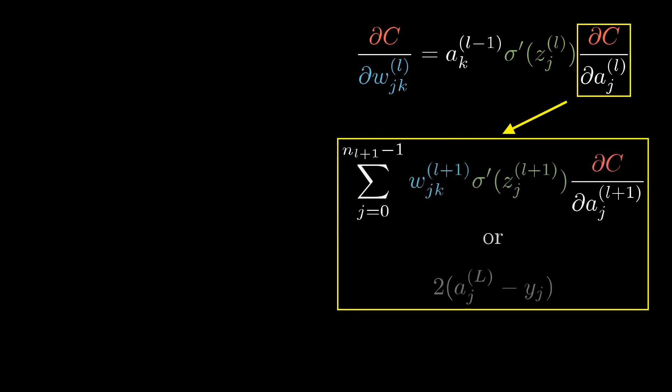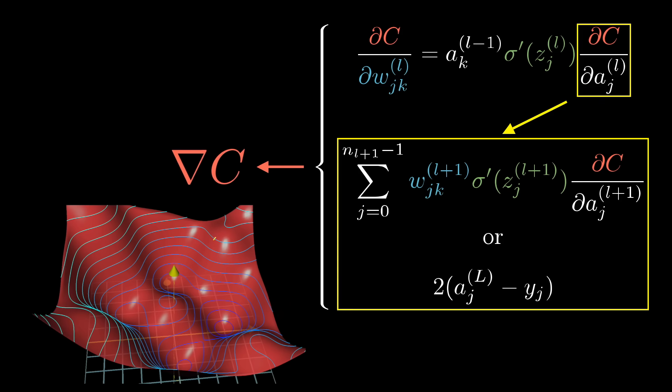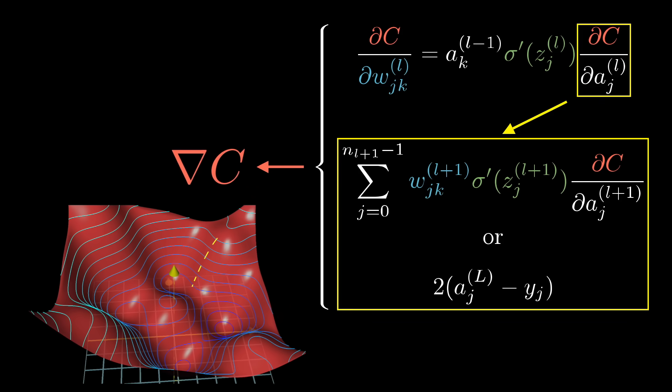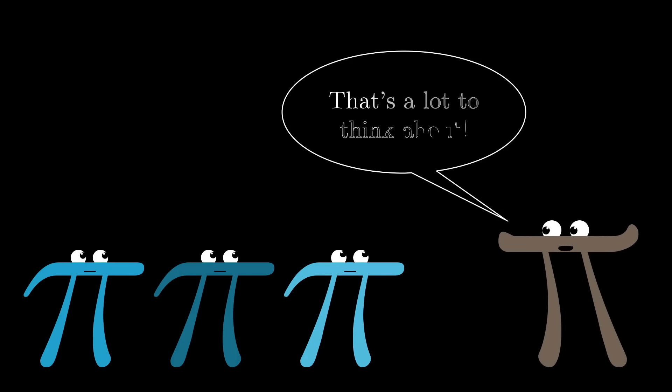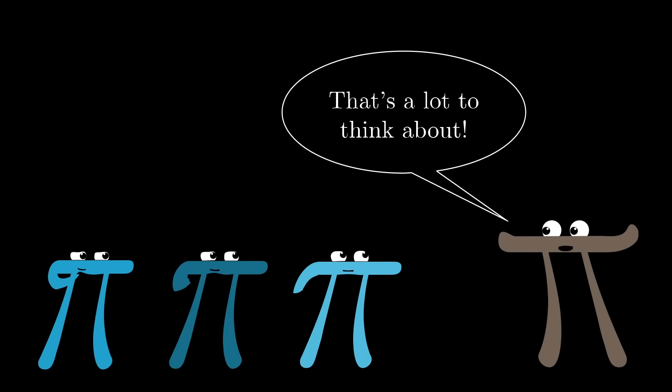These chain rule expressions give you the derivatives that determine each component in the gradient that helps minimize the cost of the network by repeatedly stepping downhill. If you sit back and think about all that, this is a lot of layers of complexity to wrap your mind around. So don't worry if it takes time for your mind to digest it all.